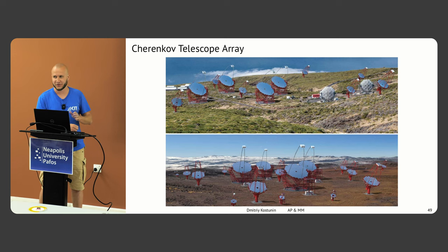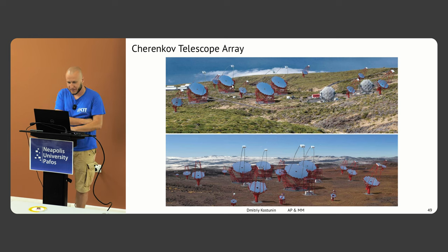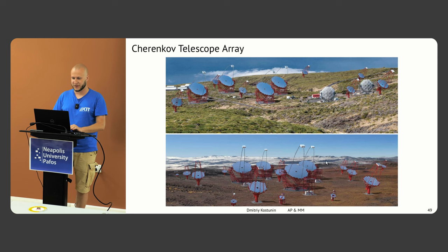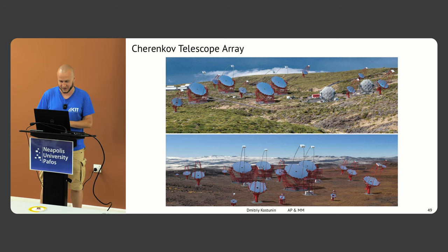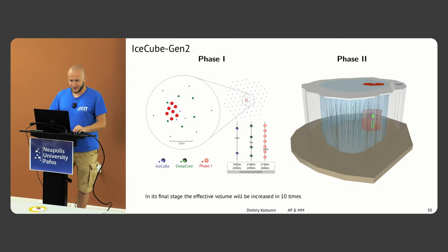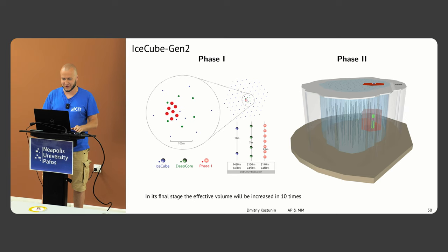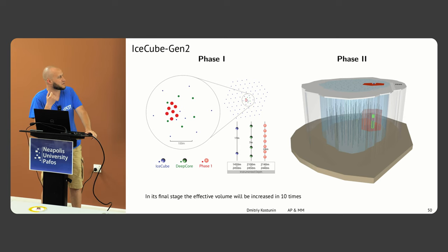The Cherenkov Telescope Array will consist of about a hundred telescopes in two hemispheres — north and south — with a diverse range of techniques: huge dish telescopes, medium dishes, and small ones. IceCube also plans to expand by ten times, simply adding more strings to detect higher-energy neutrinos. We astrophysicists, unfortunately, haven't invented anything except just expanding, but maybe there will be a scientific revolution.